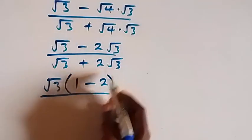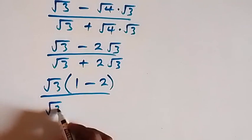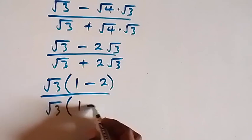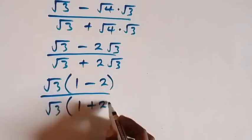Then over here, also we have √3 common, so √3 out. Then we have 1 left here, then plus 2 left here.